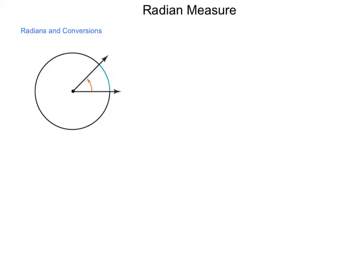In this lesson, we're going to learn about radian measurements. Up to this point in math, traditionally you've been using degrees when you talk about the size of an angle. But there is another method for talking about these measurements, and that is radians.